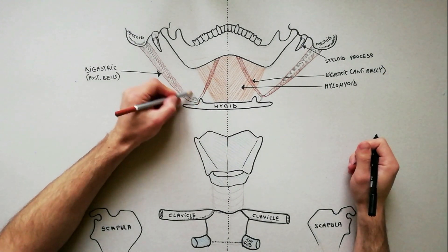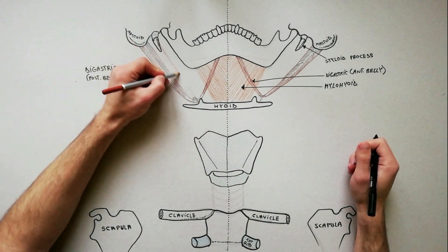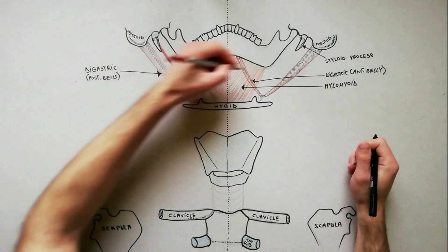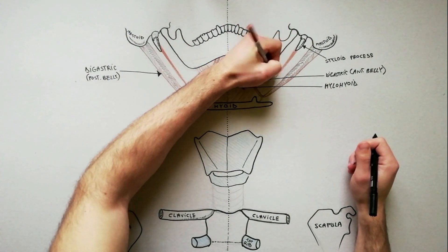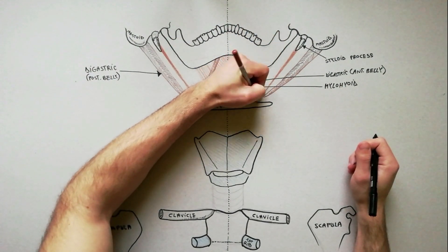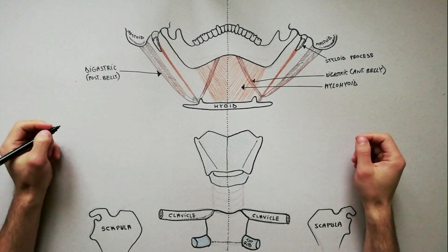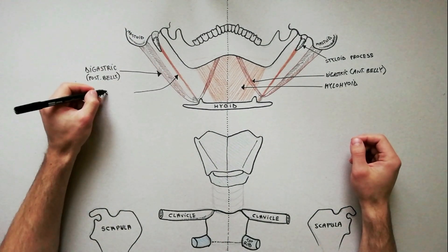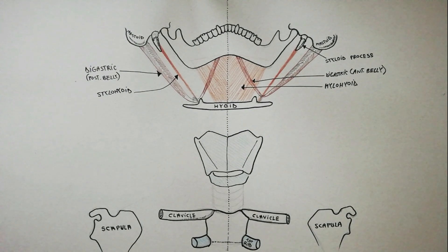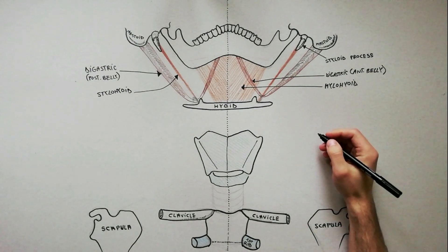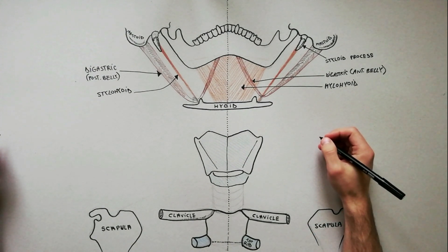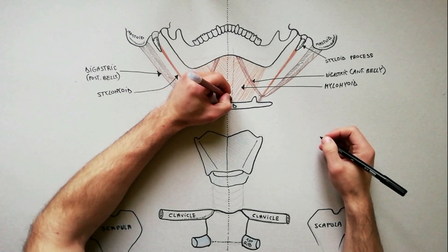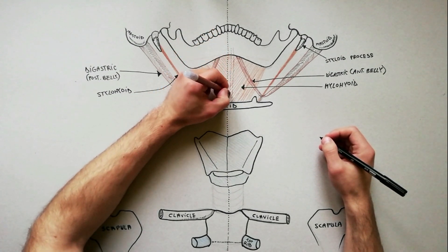The stylohyoid muscle is a slender muscle that lies along the upper border of the posterior belly of the digastric muscle. It arises from the styloid process to be inserted into the hyoid bone at the junction between the body and greater cornu.